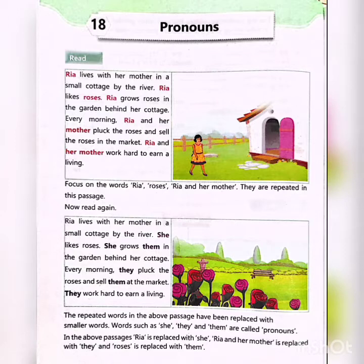So, in the above passages, Ria is replaced with 'she,' and Ria and her mother is replaced with 'they,' and roses is replaced with 'them.'